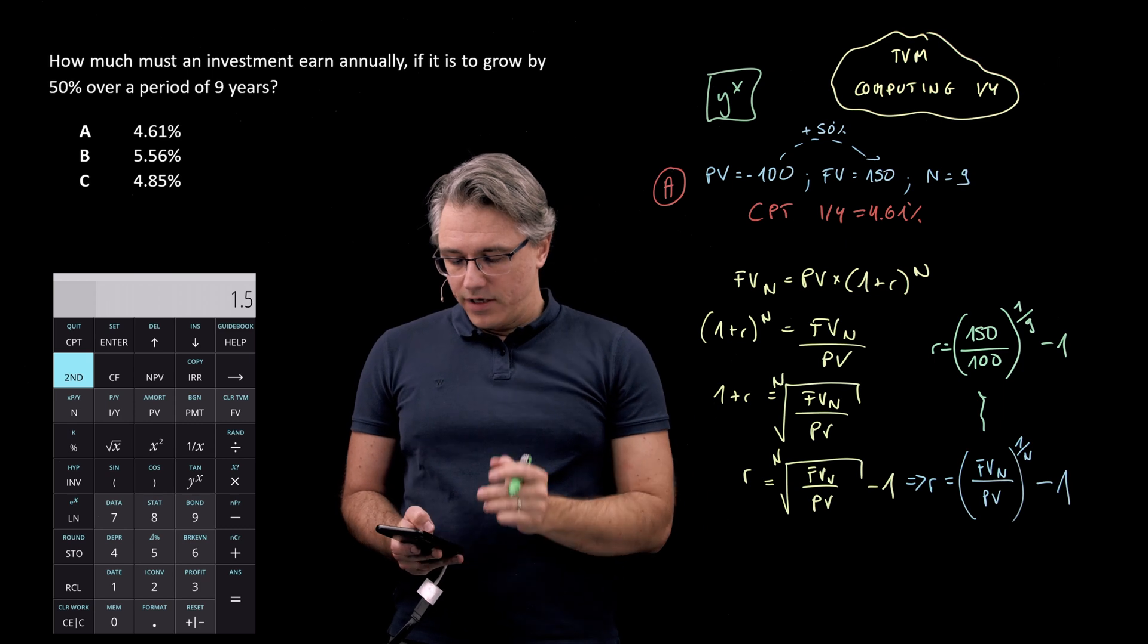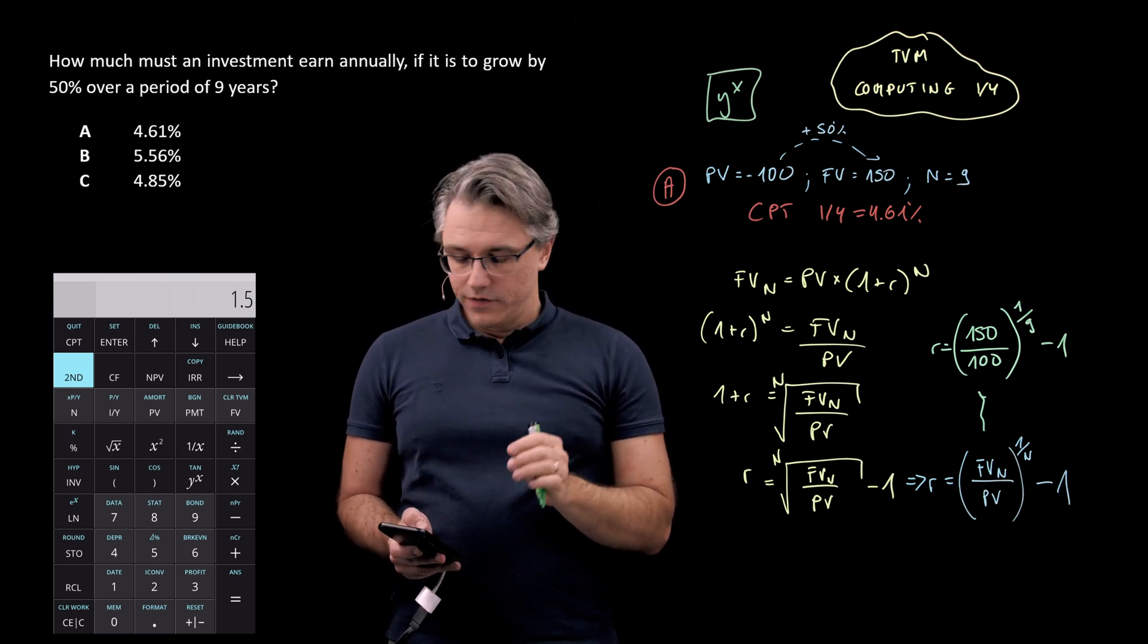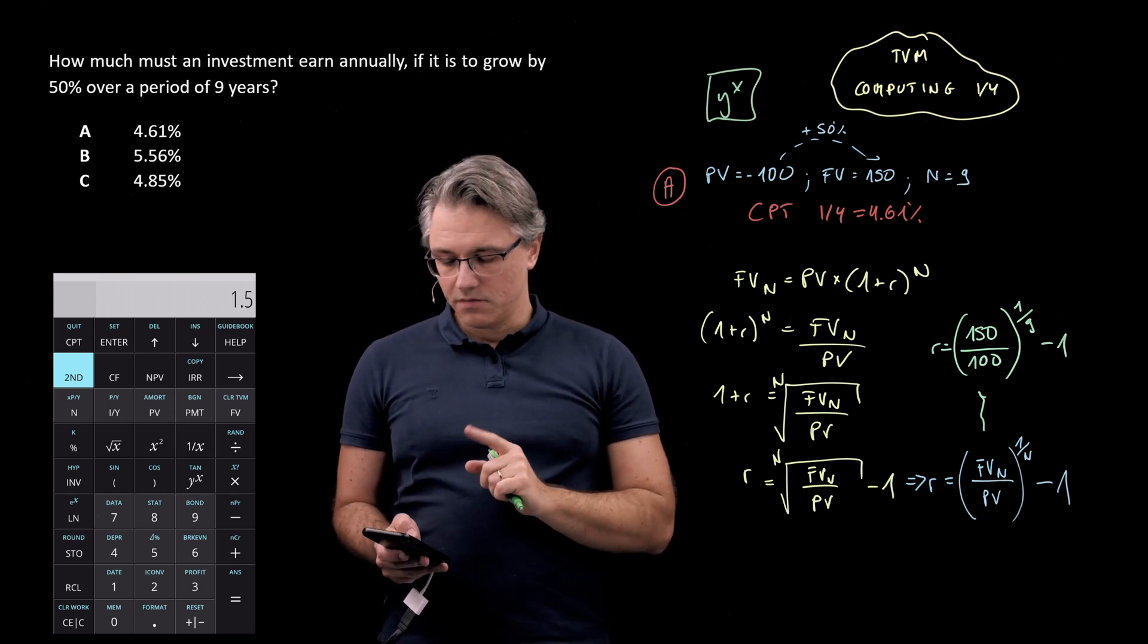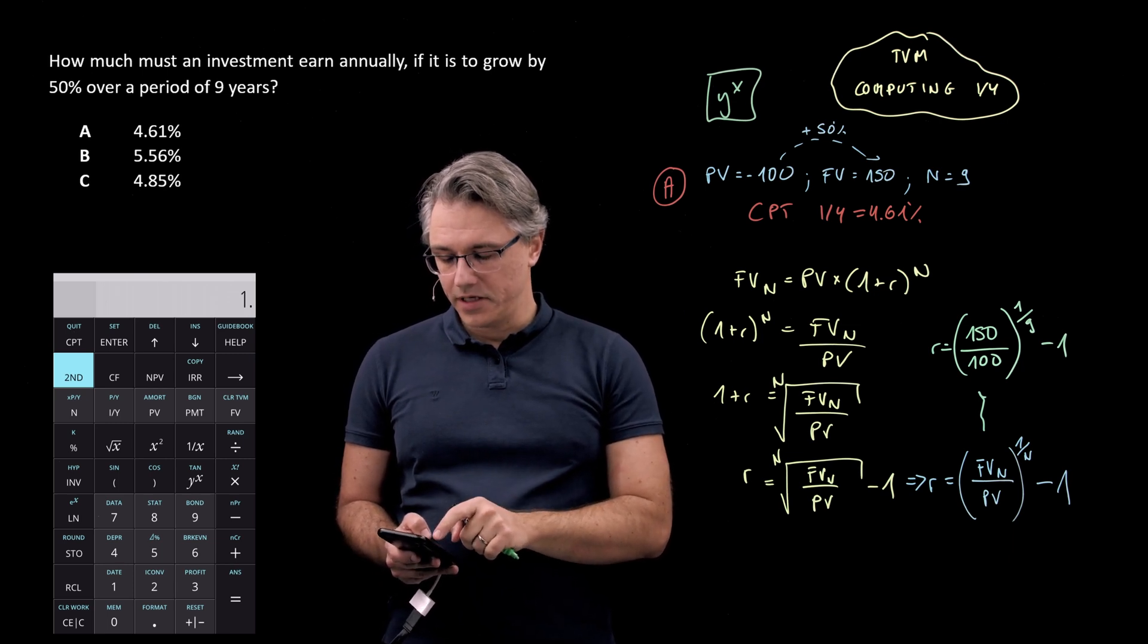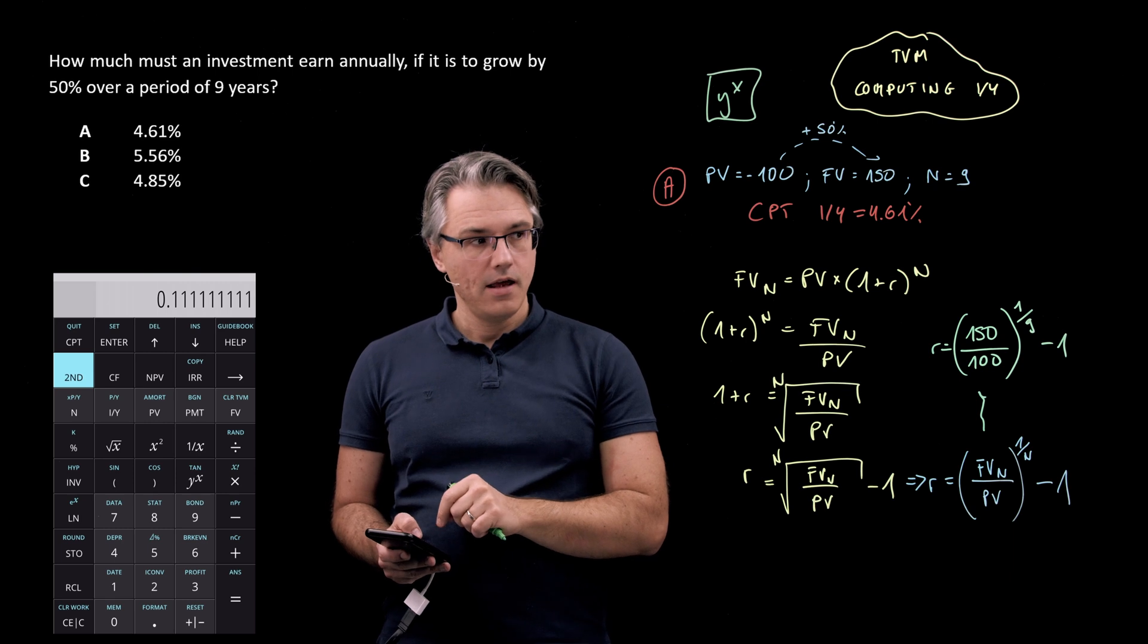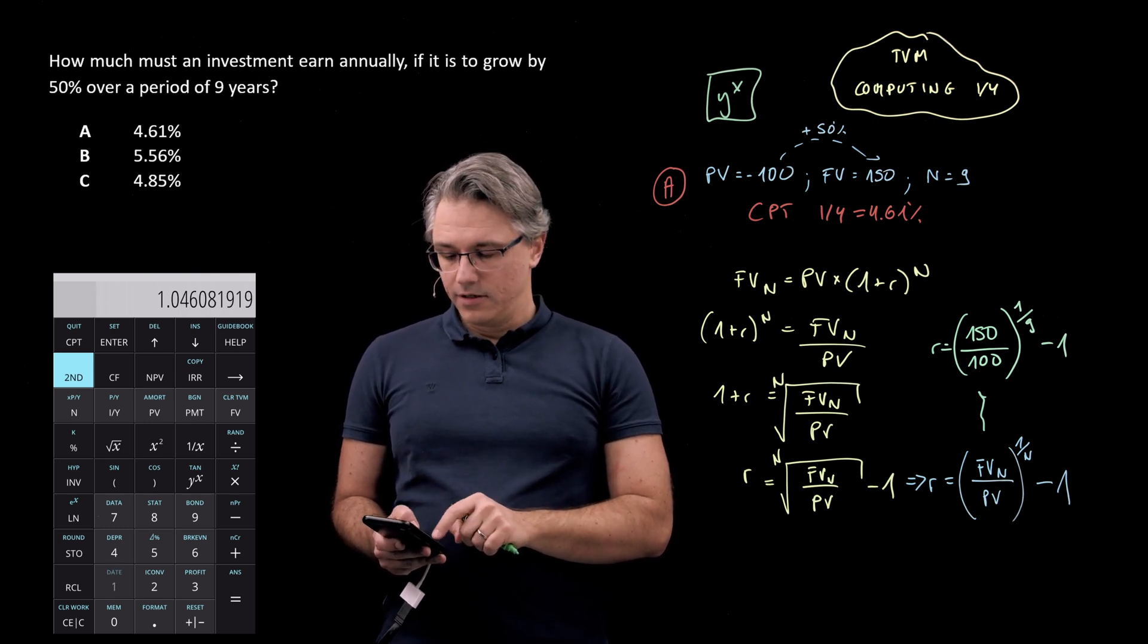So Y to the power of X, and now one over nine, what I could do is just open bracket, do one divided by N close bracket, press equals...